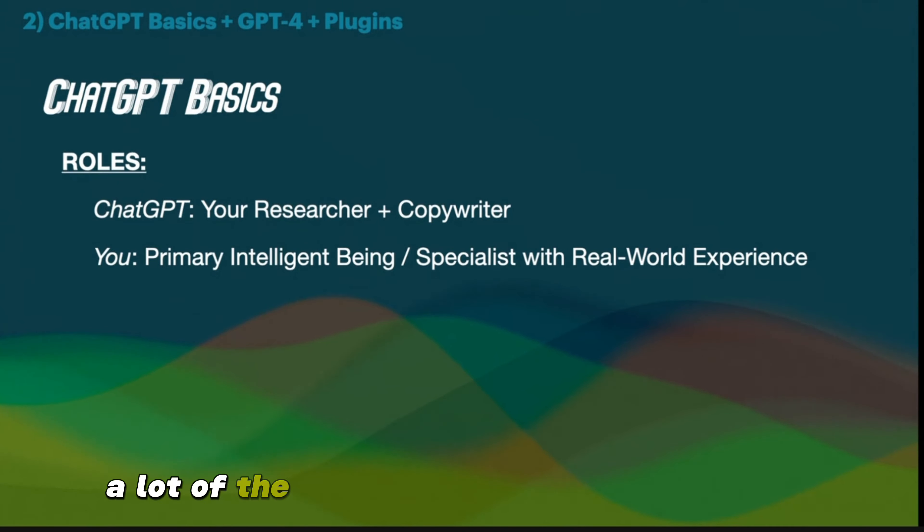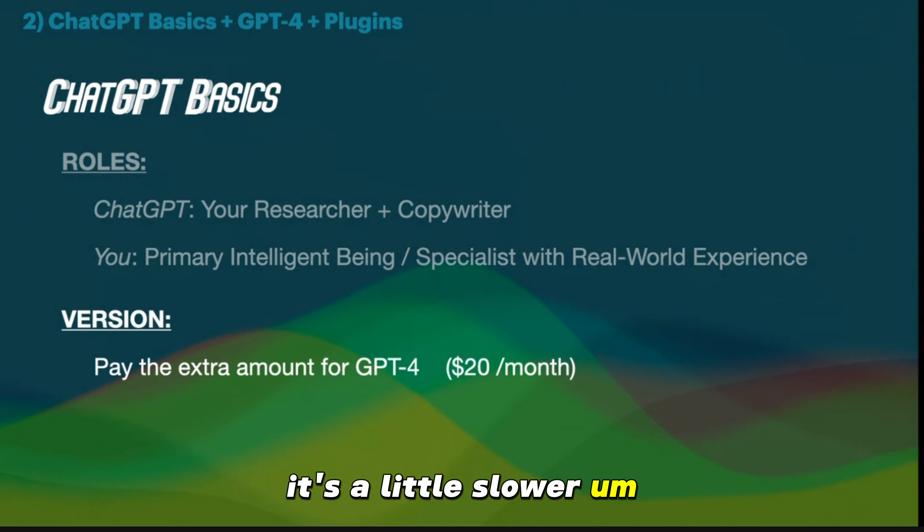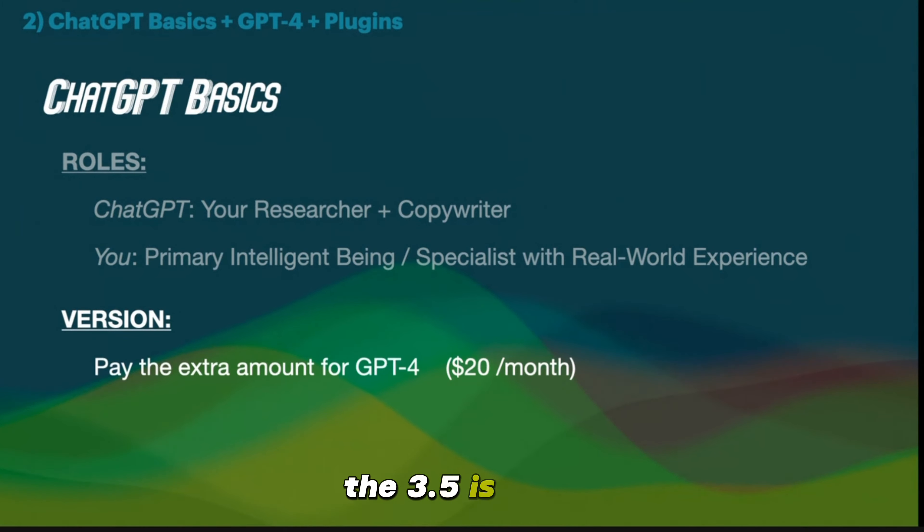I'm not with OpenAI — I don't represent ChatGPT. But I do recommend getting that $20 a month plan to go up to the advanced language model called GPT-4. If you're not doing that, it's night and day as far as the level of quality it outputs. It's a little slower, but it's amazing. The 3.5 is good, but if you're going to use this regularly, $20 a month is nothing compared to the output you'll get.